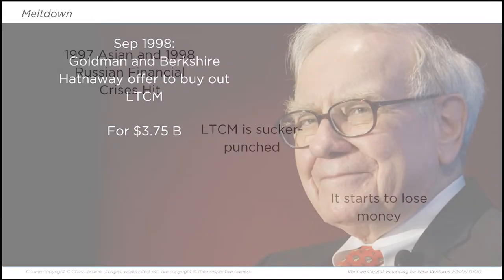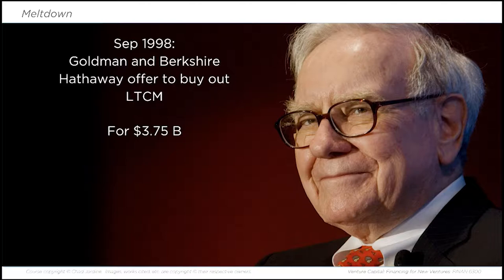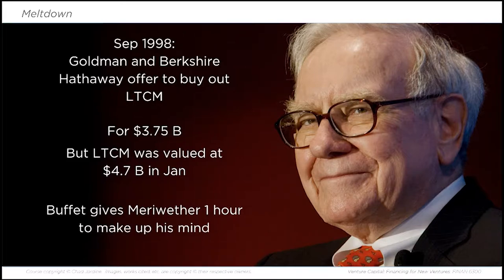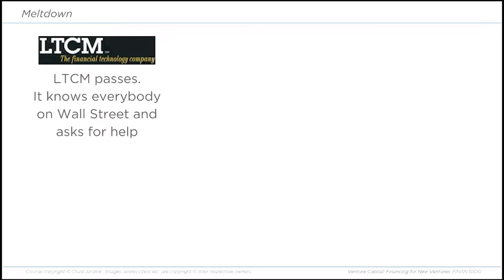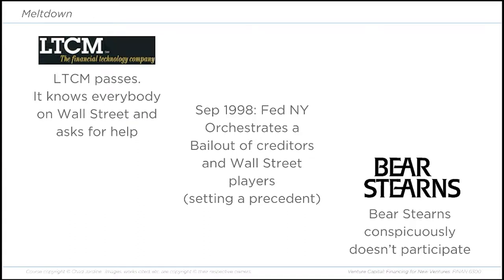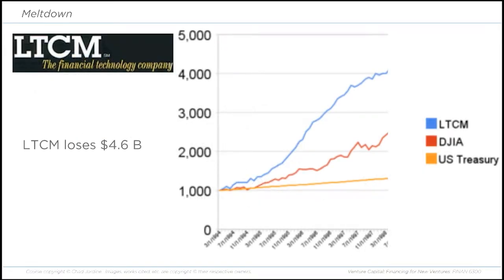LTCM started to lose money. In September of 1998, Goldman Sachs and Warren Buffett's Berkshire Hathaway offered to buy out LTCM for $3.75 billion — almost a billion less than LTCM was valued at in January of the same year. Warren Buffett gave Merriweather one hour to make up his mind. Merriweather ended up passing on the offer, banking on the fact that LTCM was the darling of Wall Street. The Federal Reserve Bank of New York orchestrated a bailout of creditors and Wall Street players to try to save LTCM. Bear Stearns — one of the big five investment banks and a key partner of LTCM — conspicuously declined to participate. Ultimately, LTCM lost $4.6 billion, having only been worth $4.7 billion at the beginning of the year. It was a colossal failure, and all of the bailout participants lost money big time.